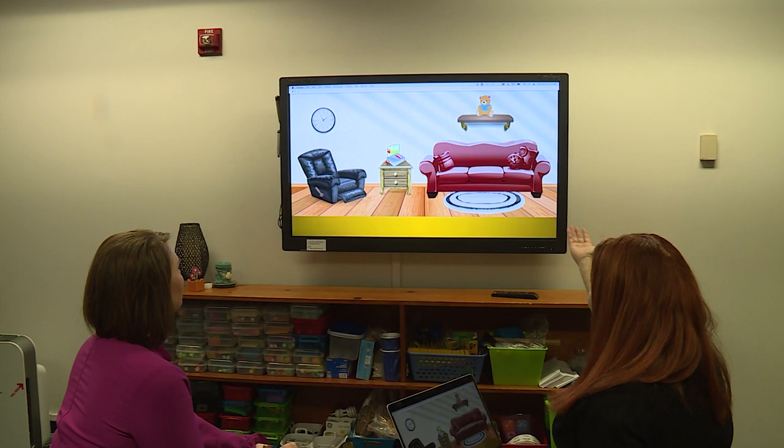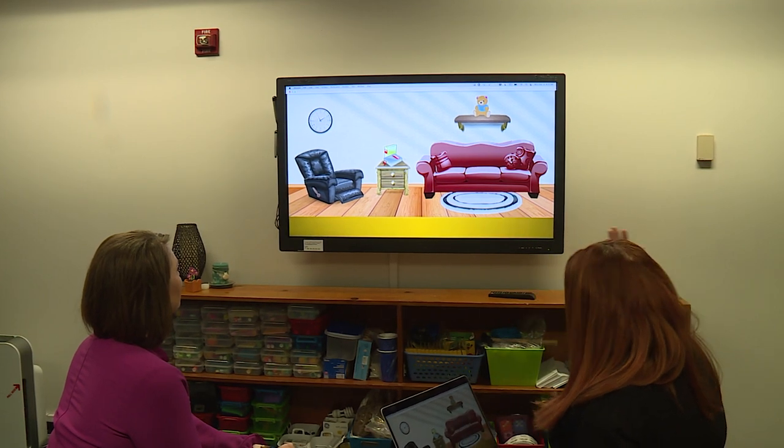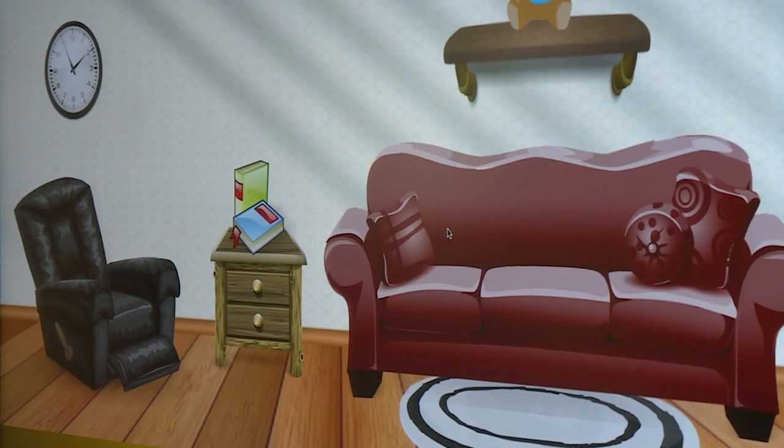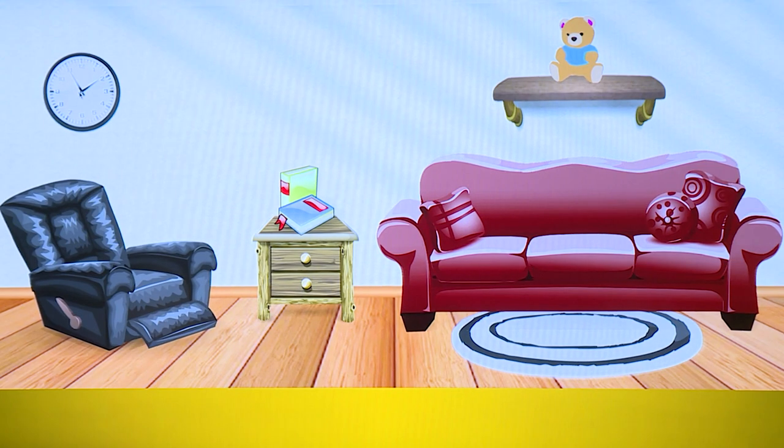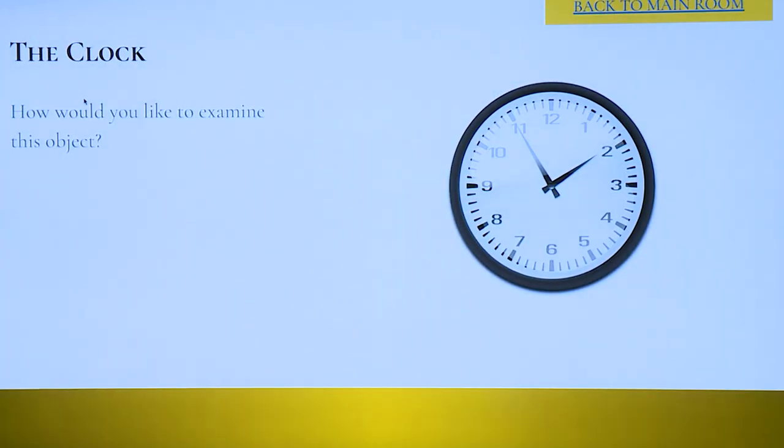So we have a bunch of objects, you can see we have a recliner, an end table, books, couch, rug, random teddy bear on a shelf, and a clock. So you just tell me which of these would you like to examine and I will click on it. So how would you like to examine this object? Imagine that you're actually there in person. What would you like to specifically look at about it?